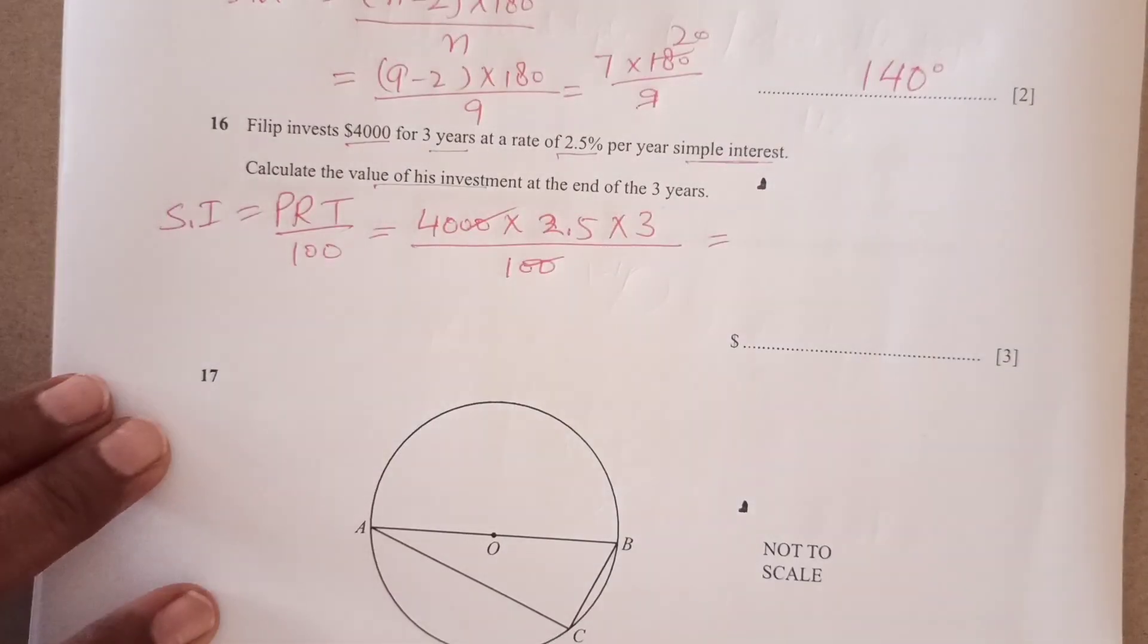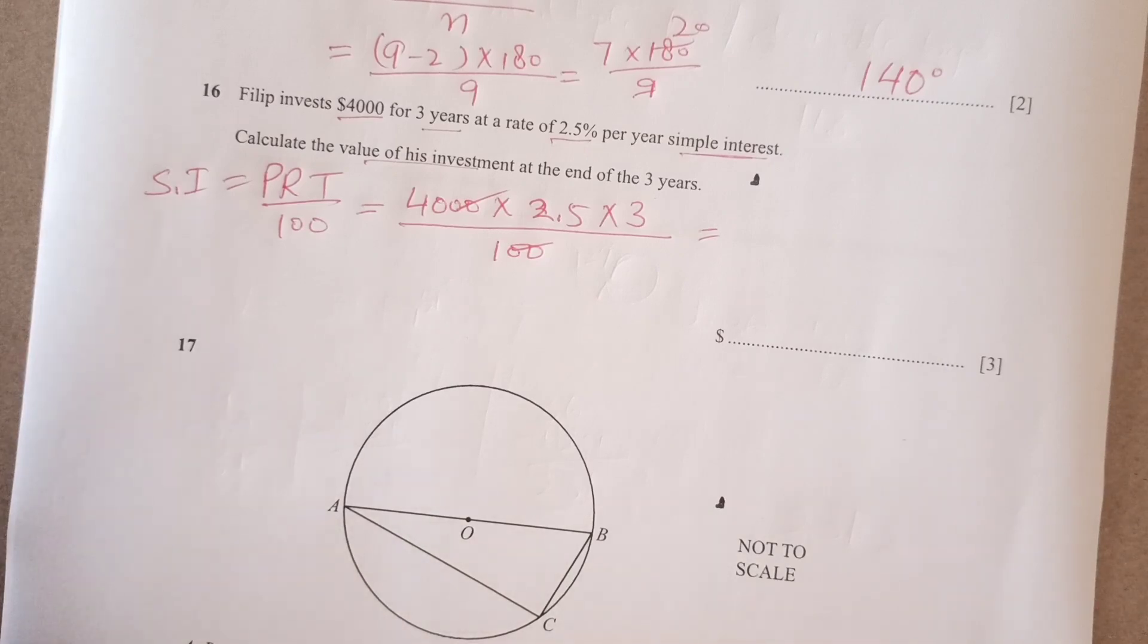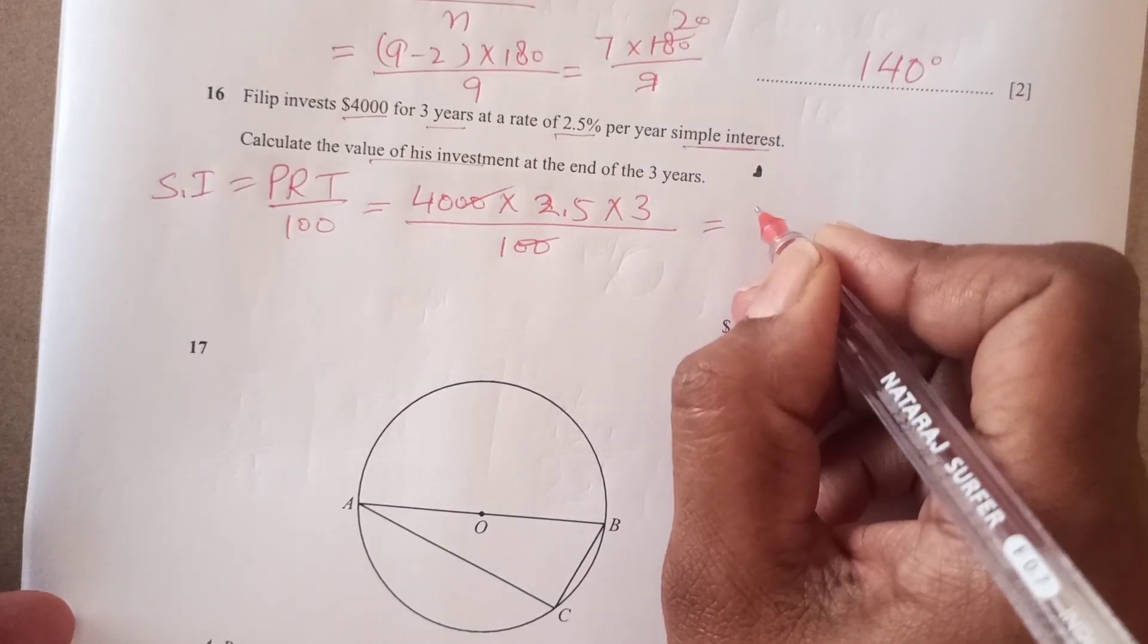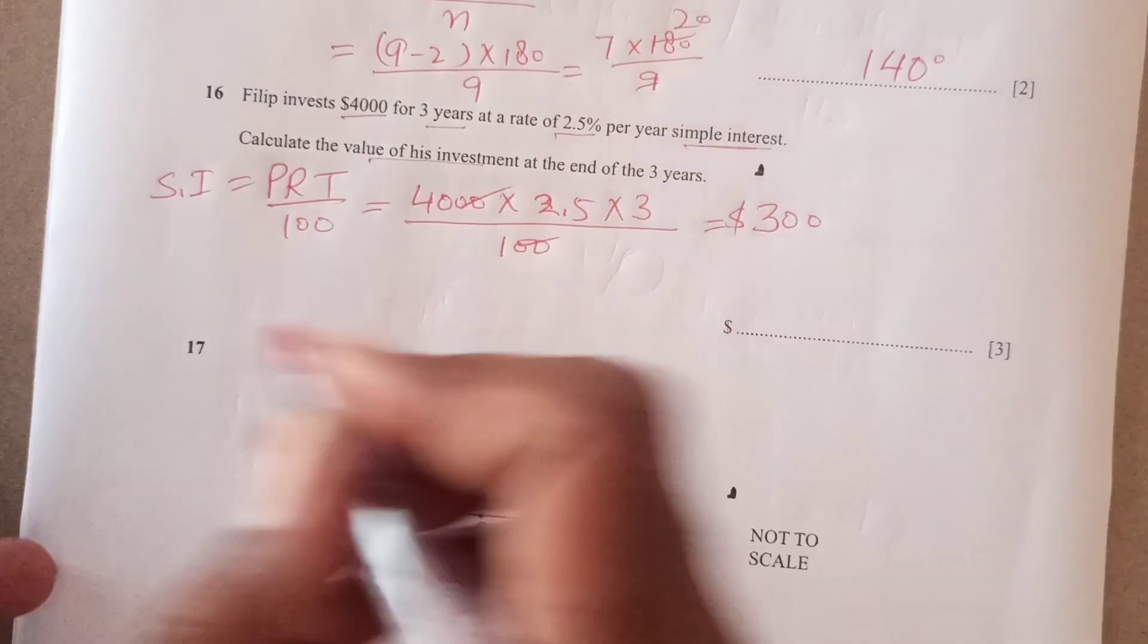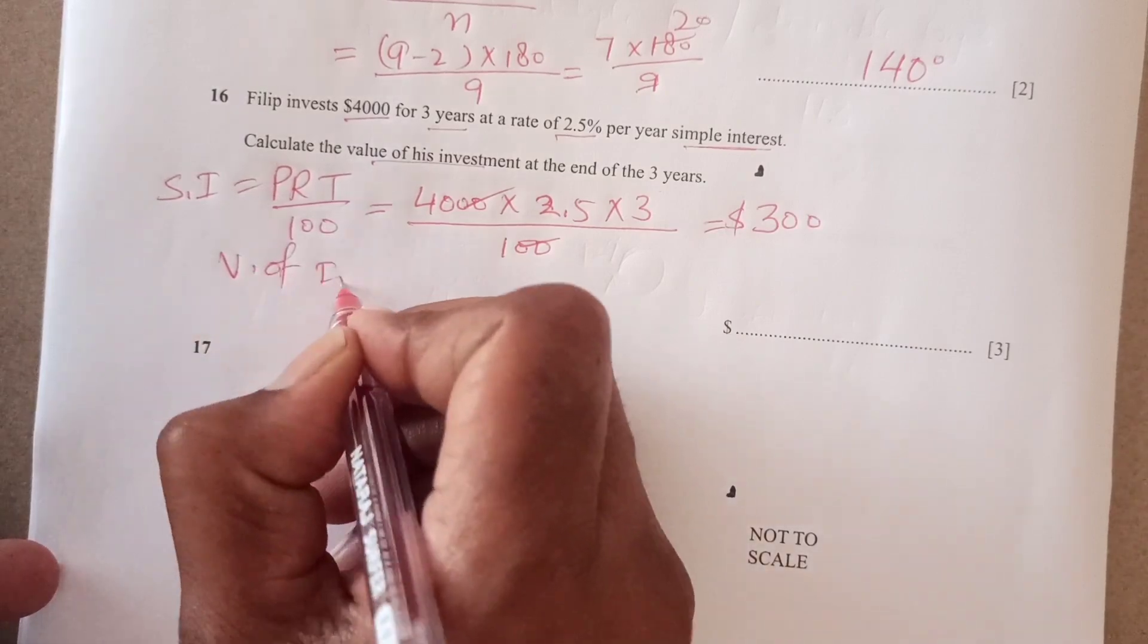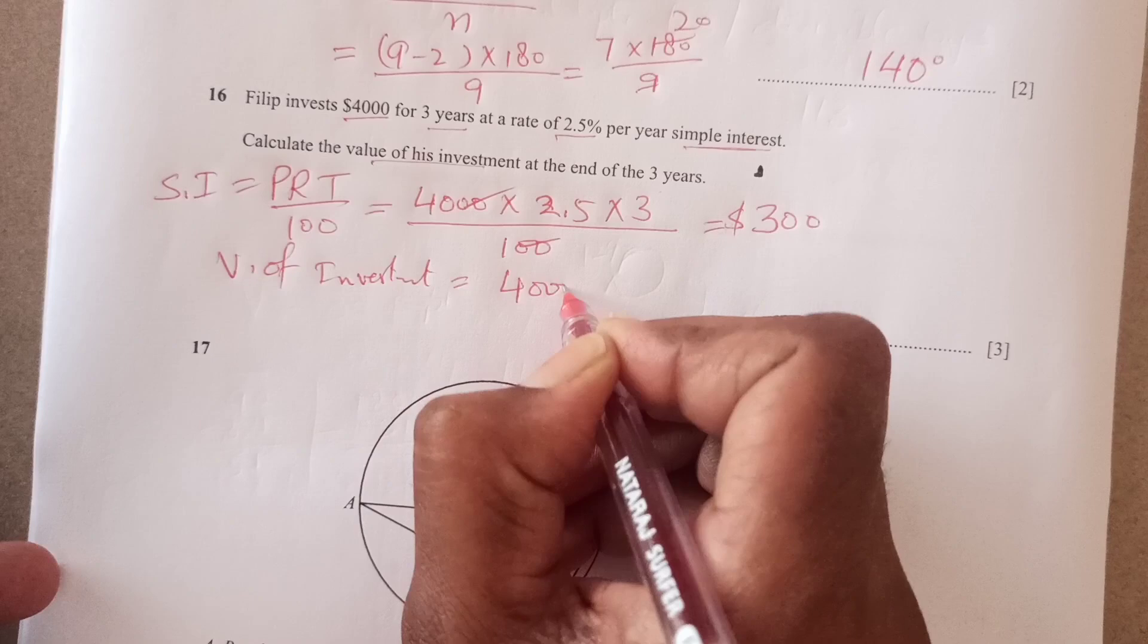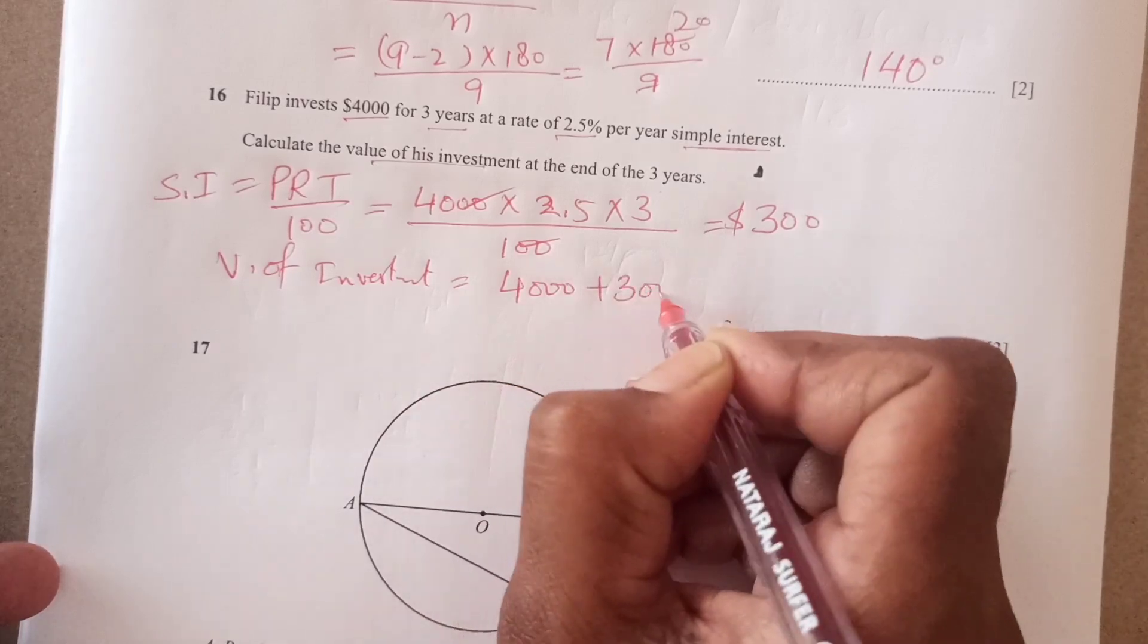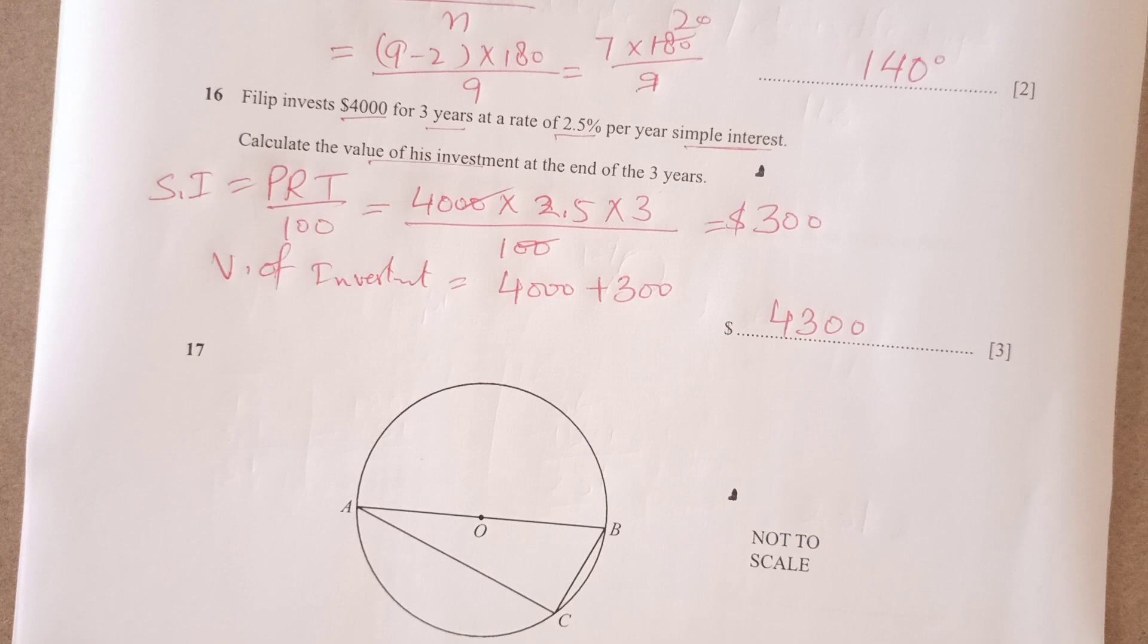So this and this is gone. So let me see. This is 40 times 2.5 times 3. It is 300 dollars, right? So value of investment is 4000 plus this interest. So 4300 dollars, right?